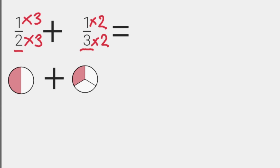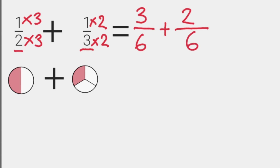One times three is three, two threes are six. So my first equivalent fraction is three over six — and that still means a half, right? I can double check: three over six is still a half. Then one times two is two, and three twos are six. So now I've got the same denominator on the bottom. Same same stays the same — we keep the same denominator for our answer and just add across the top. Three plus two equals five. So my answer is five-sixths.